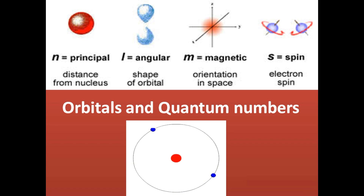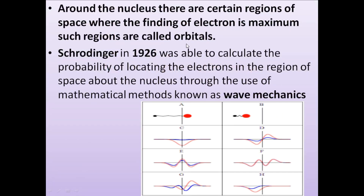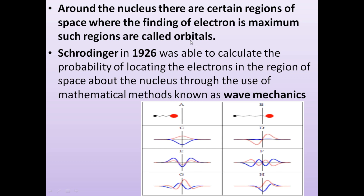There are four quantum numbers: the principal quantum number, the azimuthal quantum number, the magnetic quantum number, and the spin quantum number. These four quantum numbers define orbitals — that is, the space where we can easily locate the electron.